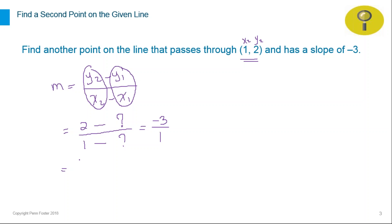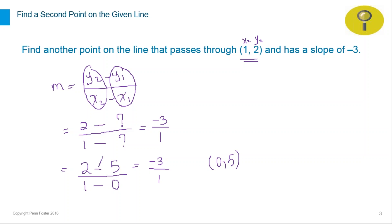Two minus five will give you negative three. For the bottom part: one minus zero will give you one. So the second point we're looking for is (0, 5). Be careful — the point is not (0, negative 5), because the formula itself has a minus sign asking us to subtract. So the point would not be (0, negative 5); we only look at the number, making it (0, 5).